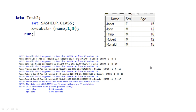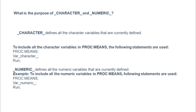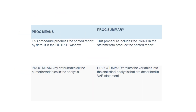The fifteenth question: what is the purpose of _CHARACTER_ and _NUMERIC_ special variable lists? If you want to keep only character variables in the final dataset, use _CHARACTER_. If you want to keep only numeric variables, use _NUMERIC_. For example, in PROC MEANS, you can use _NUMERIC_ to analyze only numeric variables, or use _CHARACTER_ to select only character variables for analysis.